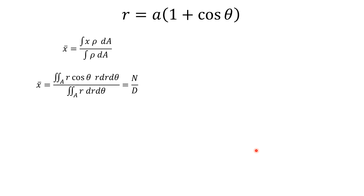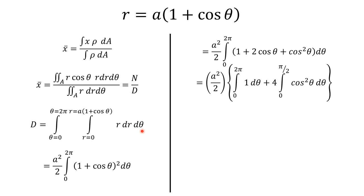Now we will calculate denominator. So denominator is: again theta varies from 0 to 2 pi, r varies from 0 to a into bracket 1 plus cos theta, r dr d theta. Now this is a simple integration. After integrating this, we get...